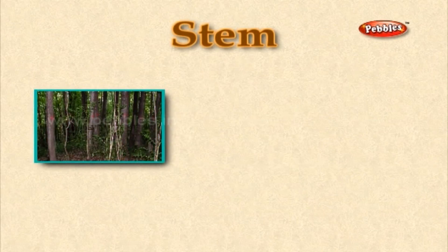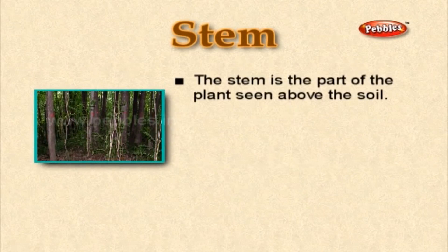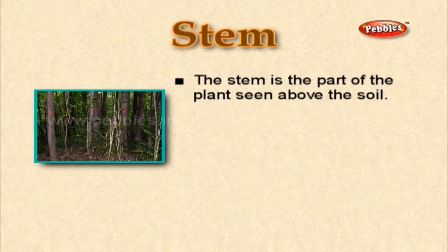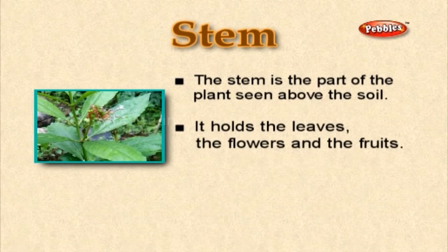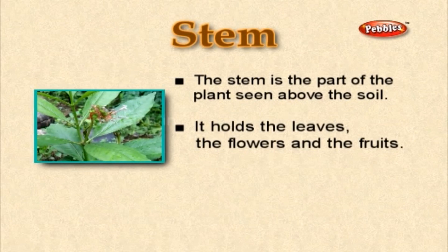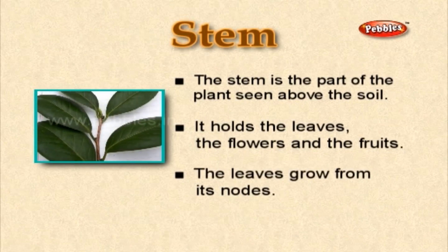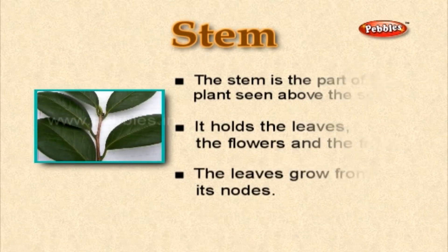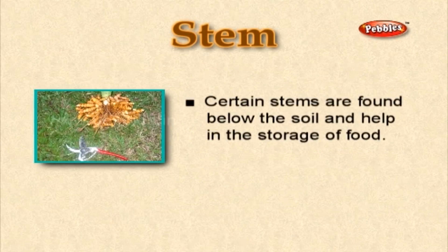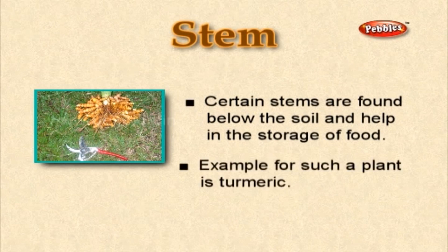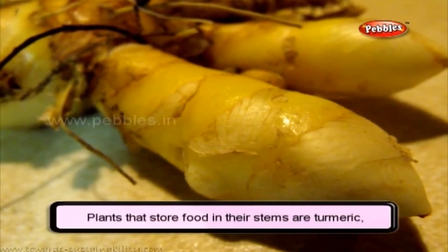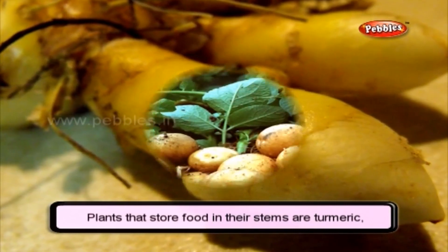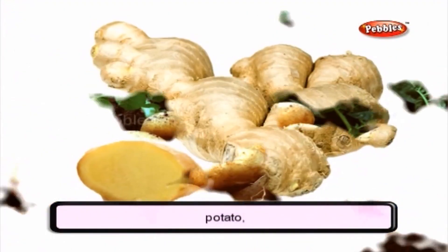The stem is the part of the plant seen above the soil. It holds the leaves, the flowers, and the fruits. The leaves grow from its nodes. Certain stems are found below the soil and help in the storage of food. Examples of plants that store food in their stems are turmeric, potato, and ginger.